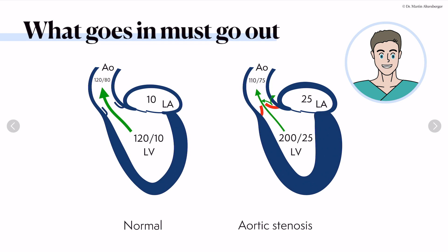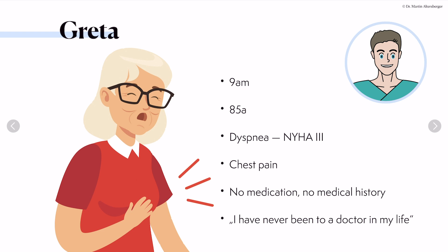What happens in aortic stenosis? There is aliasing in the valve area because the valve is very tight. The pressure in the ventricle rises to very high degrees, leading to hypertrophy of the ventricle. Diastolic pressures rise as well, and left atrial pressures do too. When aortic stenosis is present, the outflow of the ventricle is blocked, so pressures have to rise to maintain blood pressure and stroke volume throughout the body.